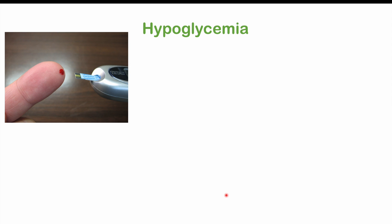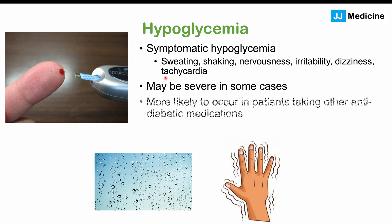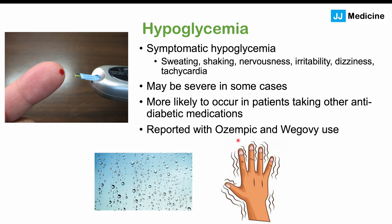Hypoglycemia, or low blood sugar, is another important side effect. Because semaglutide is a GLP-1 agonist that promotes glucose-dependent insulin secretion, it can cause excess insulin release leading to hypoglycemia. Symptoms include sweating, shaking, nervousness, irritability, dizziness, and tachycardia. Cases can be severe. The risk increases dramatically when patients are also taking other antidiabetic medications; if only taking Ozempic or Wegovy alone, the risk is lower. Hypoglycemia has been reported with both Ozempic and Wegovy use.